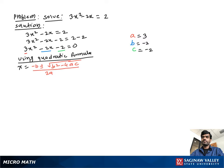Using the quadratic formula, x equal to negative b plus or minus square root of b squared minus 4ac over 2a. Substituting the values of a, b, c, we get x equal to positive 2 — because b is negative 2, times negative becomes positive 2 — plus or minus square root of negative 2 squared minus 4 times 3 times negative 2, over 2 times 3.